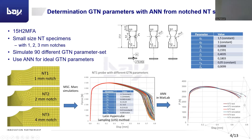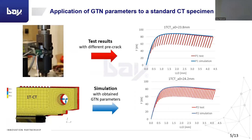After this, the next task was to validate the GTN parameters with the help of normal CT specimens. Therefore, standard CT tests and simulations were carried out, as can be seen from the diagram. It was for two crack sizes, and from the curves it can be seen that they are going very well. Therefore, the GTN parameters are working well for this material.